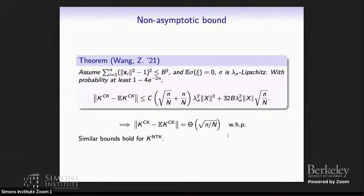Besides the limiting spectral distribution, we can also characterize where the largest eigenvalue is. By using an epsilon-net argument, we can prove that the spectral norm of the conjugate kernel matrix minus its expectation is concentrated on a compact set, with the order of the difference being square root of little n over big N. So as long as big N over little n goes to infinity, they are concentrated. This gives you an upper bound on the largest eigenvalue, and the limiting spectral distribution gives you a lower bound, so combining the two results tells you the operator norm of this difference—the conjugate kernel matrix minus its expectation—is exactly of order square root of little n over big N. You can prove a similar bound for the neural tangent kernel matrix.